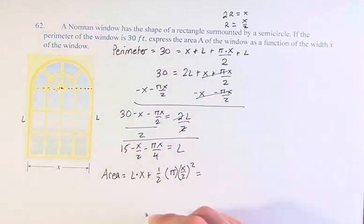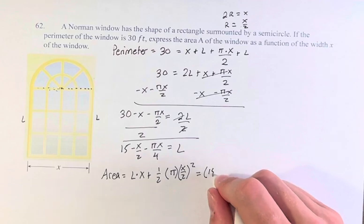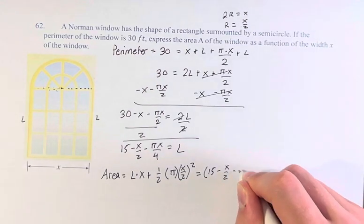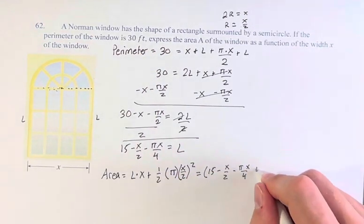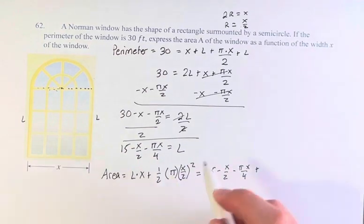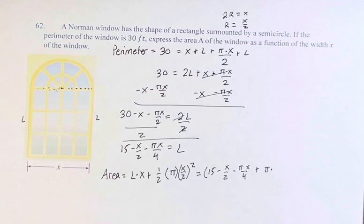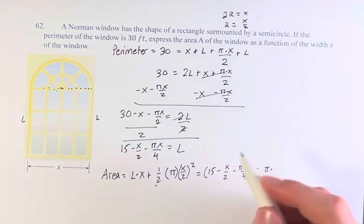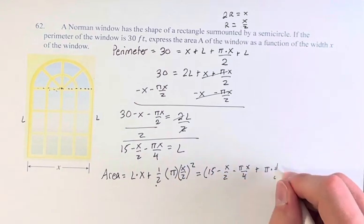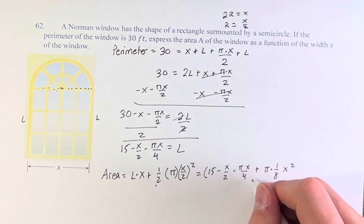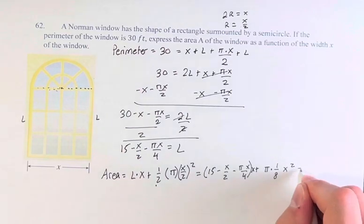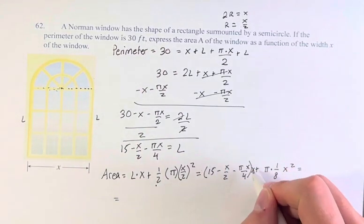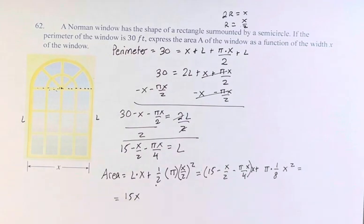This can be turned into L is 15 minus x over 2 minus pi x over 4, times x, plus pi times 1 half times 1 half squared, which is 1 half times 1 fourth, is 1 eighth x squared. So this is equal to 15 times x. And if it's unclear why I'm multiplying by x, because I forgot it in writing it down, this is L.